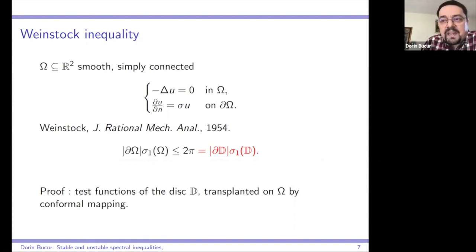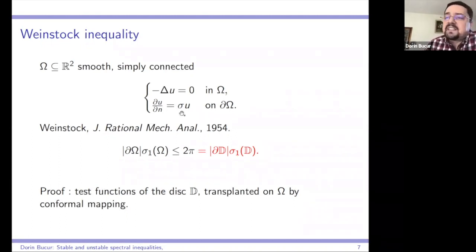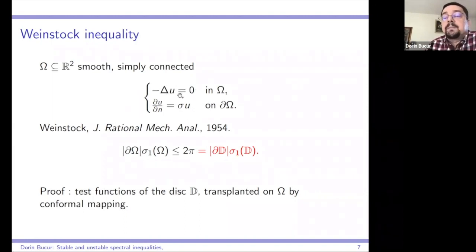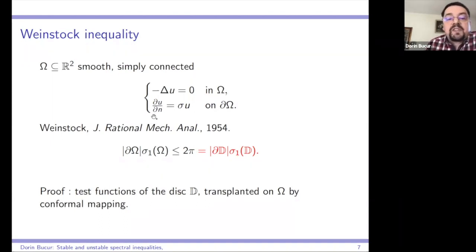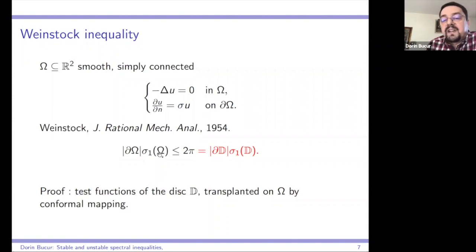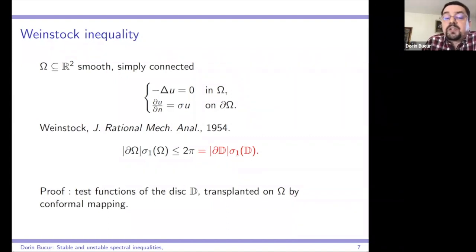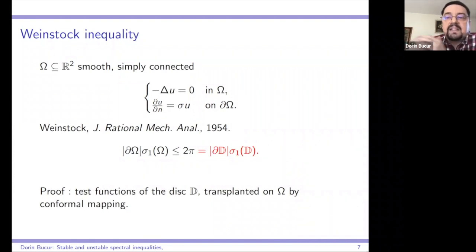Let me start with the Weinstock inequality. In two dimensions, omega is a smooth simply connected set and we look at the Steklov eigenvalues: minus Laplacian u equals zero, and du/dn equals sigma u on the boundary. Weinstock in 1954 proved that the product between the perimeter of omega and the first non-zero Steklov eigenvalue is less than or equal to 2π, with equality exactly on the disk. He also proved the disk is the only smooth simply connected set realizing the maximum.